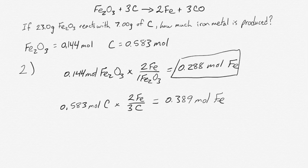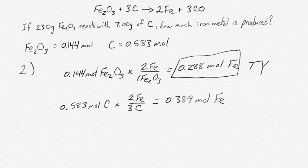And whichever prediction is smaller is the theoretical yield. So again, we decide we can make 0.288 moles of iron. That's the theoretical yield. And we know it's the theoretical yield because it's the smaller amount.